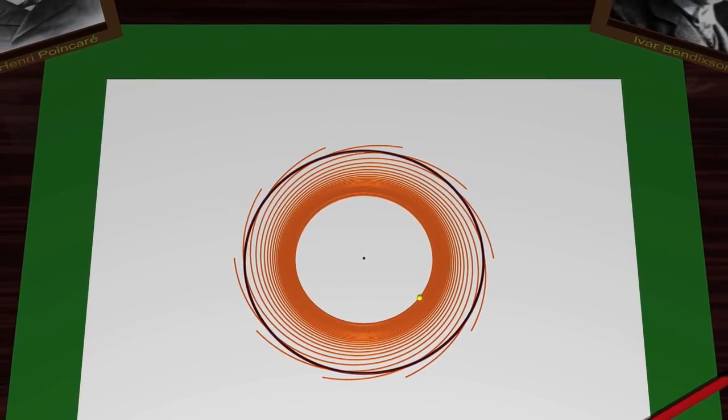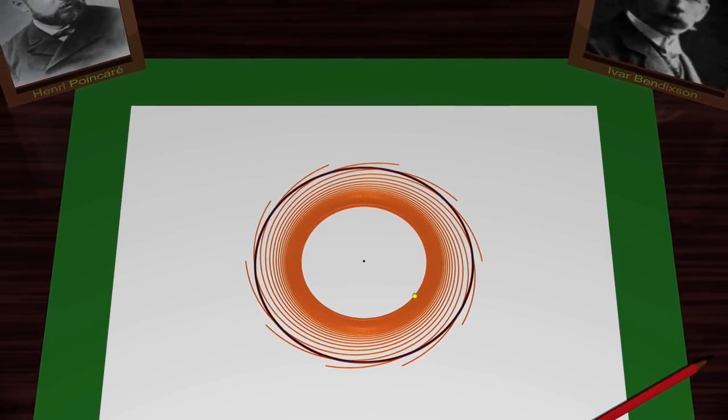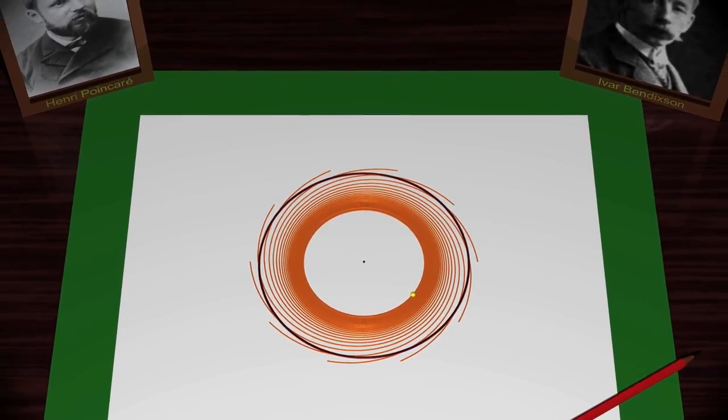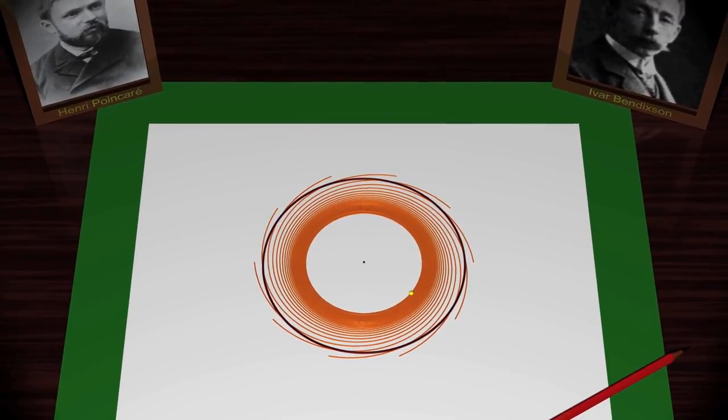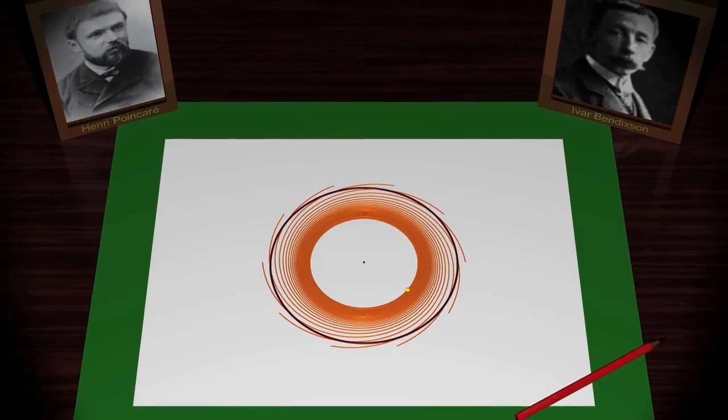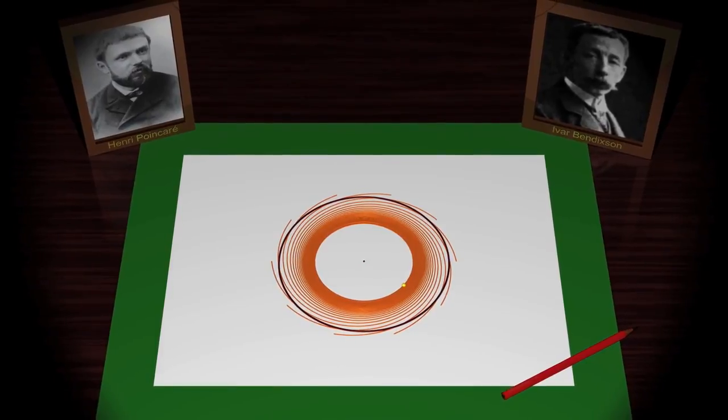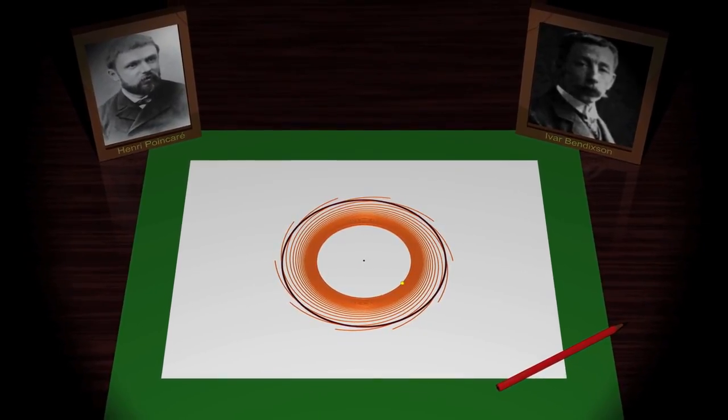But Poincaré soon discovered that his theorem is valid only for vector fields in two dimensions, that is to say, for very small systems. For three dimensions and higher, we will see that the situation can be much, much, much more complicated and very beautiful. No more nice simple limit cycles. Welcome to the world of chaos.